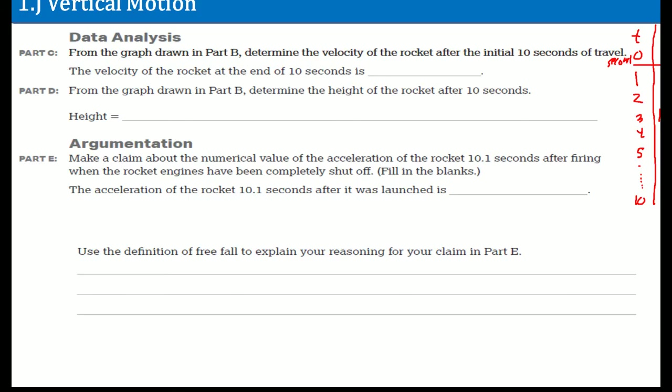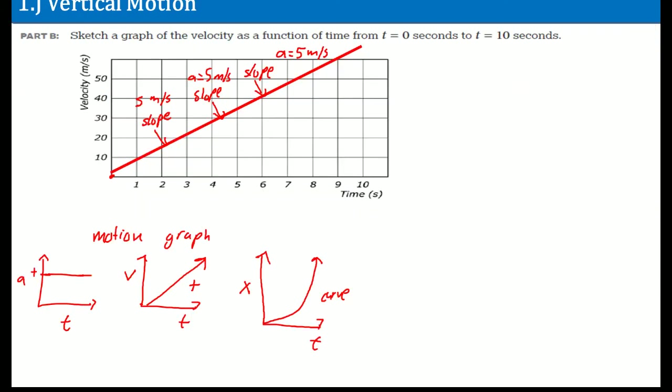So we know that the velocity at t equals 10 seconds should be 50 meters per second. Now, from the diagram in part B, determine the height. So how do we go from velocity into the height?